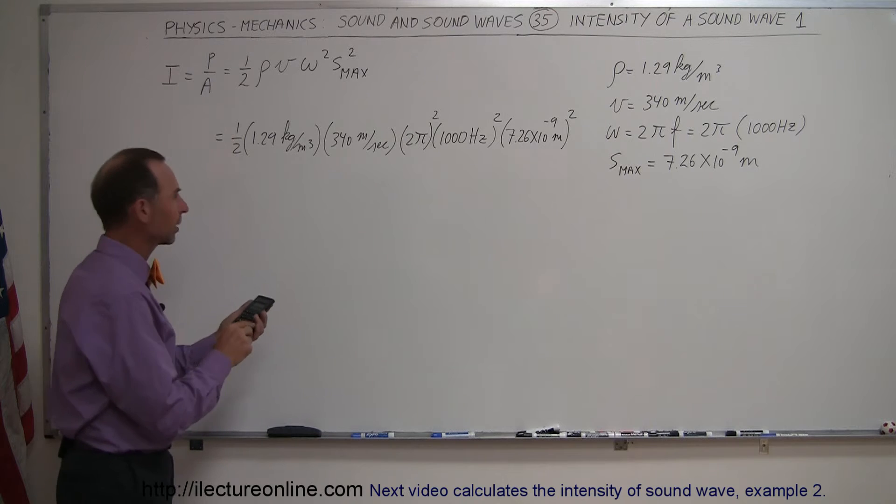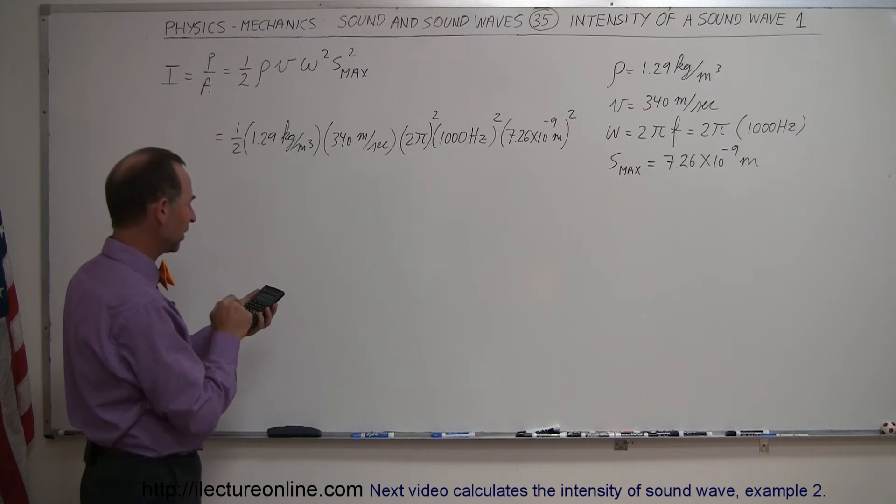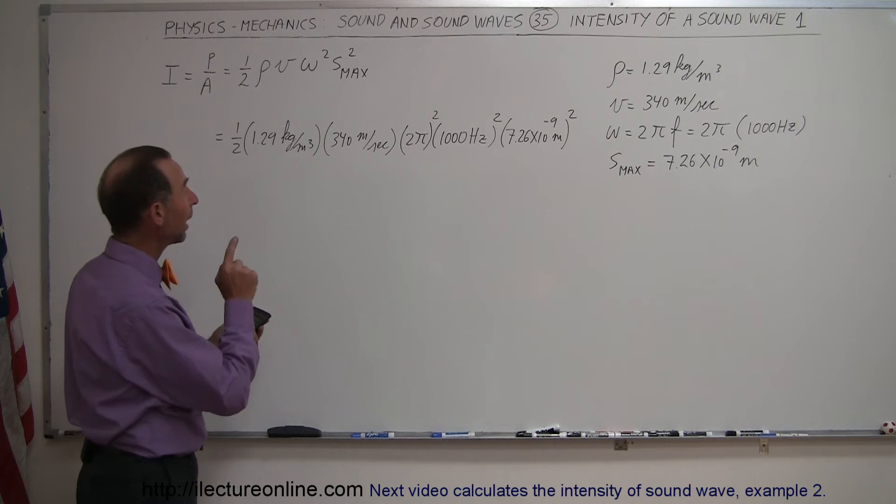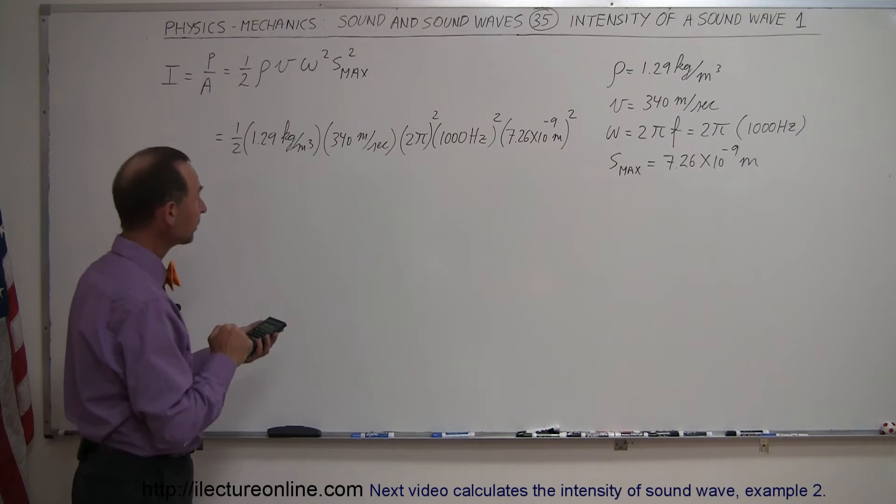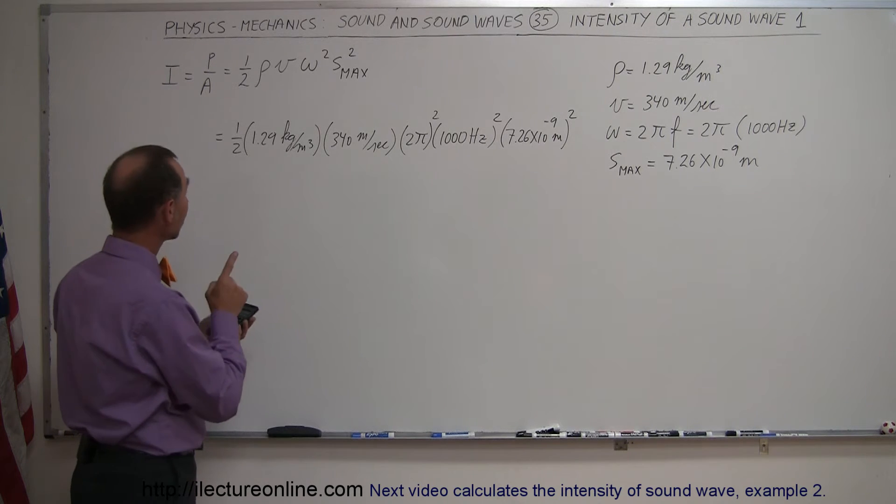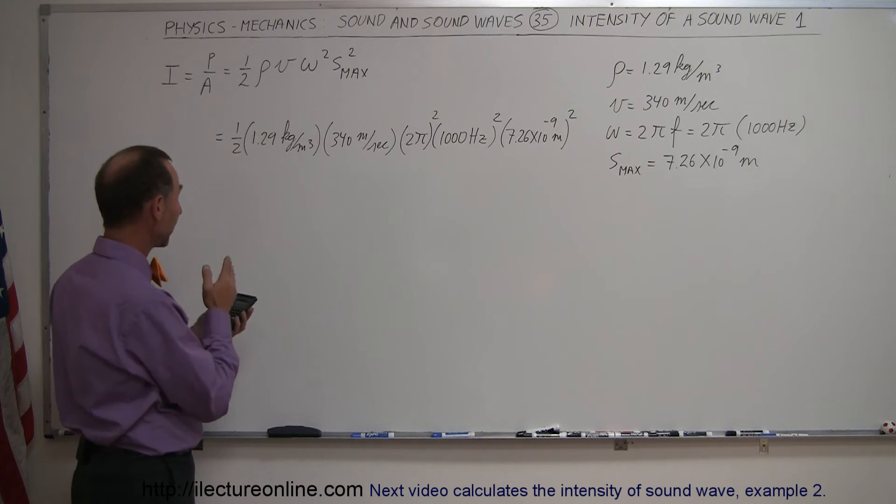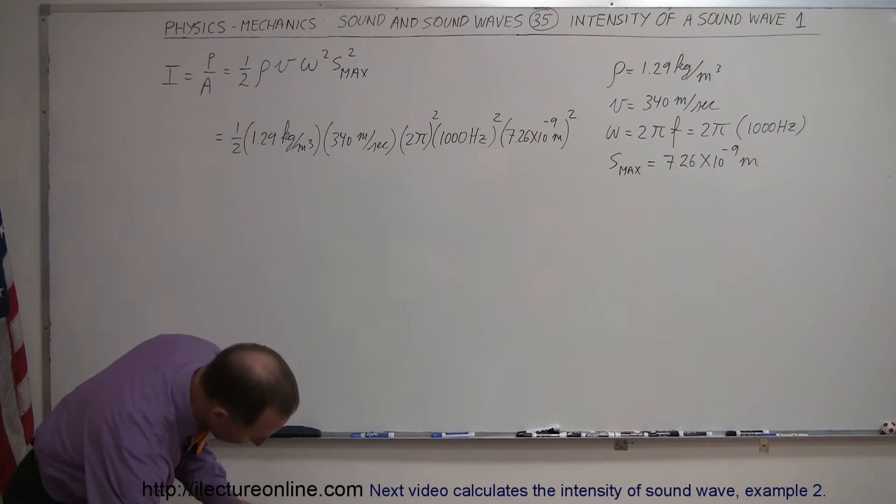Alright, let's plug those numbers into our calculator. So we have that one still there from the previous video, I'm going to square that. There we go. Now we're going to multiply times a thousand squared, times two squared, and times pi squared. Multiply times 340, multiply times 1.29, and multiply times 0.5.